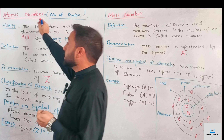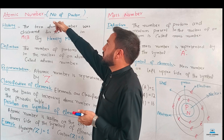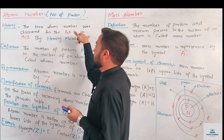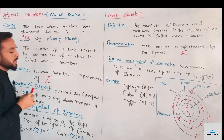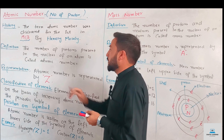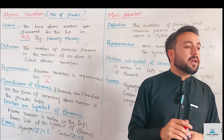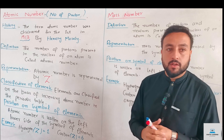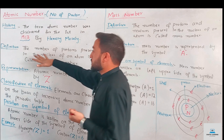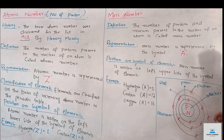What is the atomic number? The atomic number is the number of protons present in the nucleus of an atom. We can represent and identify how much the atomic number is based on this concept.